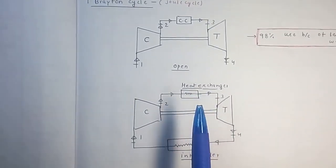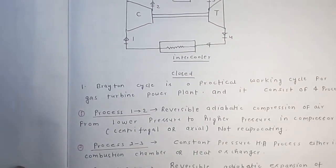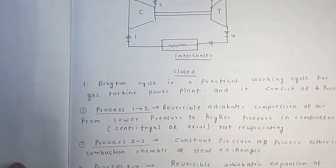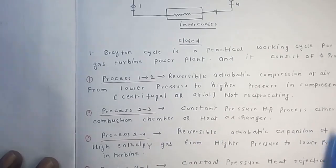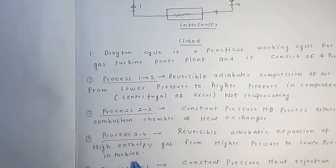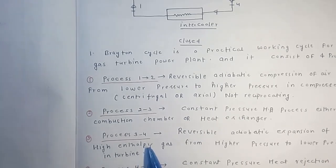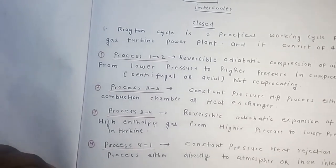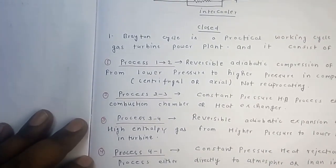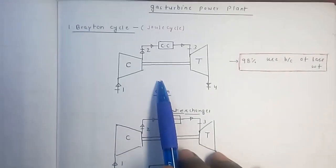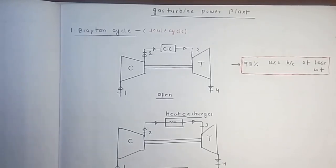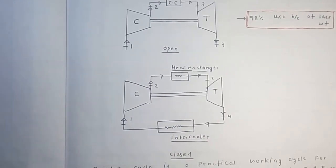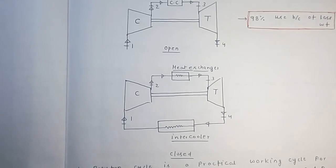Process 3 to 4 is reversible adiabatic expansion of high enthalpy gas from higher pressure to lower pressure in the turbine — this is the isentropic expansion process where work output is obtained. Process 4 to 1 is constant pressure heat rejection — either directly to the atmosphere in an open cycle, or through an intercooler in a closed cycle. This completes the Brayton cycle.